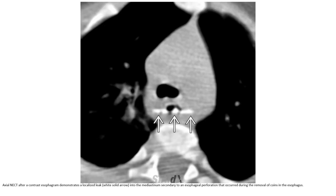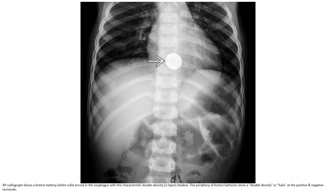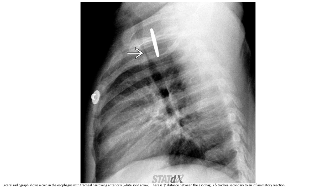Non-contrast and CT after contrast of the esophagus demonstrated a leak into the mediastinum secondary to a perforation that occurred during the removal of a coin in the esophagus. AP radiographs show button batteries in the esophagus with characteristic double density shadow. The periphery of button batteries shows higher density or halo and positive step-off sign. Radiographs also show a coin in the esophagus with trachea narrowing anteriorly, and there is a distance between the esophagus and trachea secondary to an inflammatory reaction.